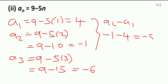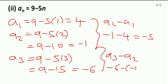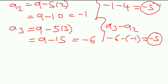Now finding the differences: a2 − a1 = −1 − 4 = −5, and a3 − a2 = −6 − (−1) = −5. The common difference is the same, so once again we write down: it is an AP.